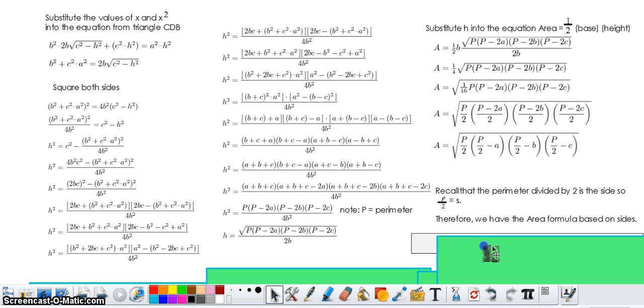Therefore, we have the area formula based on sides. Plugging in S for P divided by two, we have the A equals the square root of S times S minus A times S minus B times S minus C.